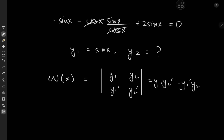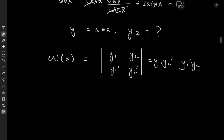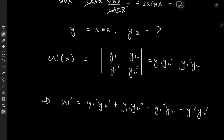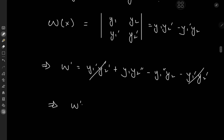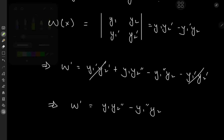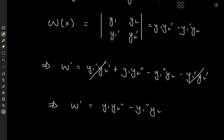It turns out that Abel's method requires us to solve a differential equation involving the Wronskian — so we're solving a differential equation inside of a differential equation problem, which is pretty interesting. The first step is to get a differential equation involving the Wronskian by differentiating it. So W prime equals y1 prime times y2 prime plus y1 times y2 double prime, using the product rule, minus y1 double prime times y2 minus y1 prime times y2 prime. After cancellation, this implies W prime equals y1 times y2 double prime minus y1 double prime times y2.